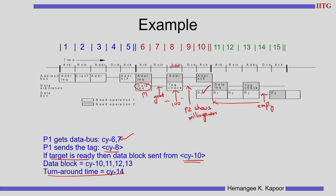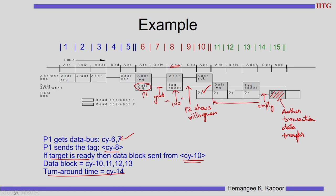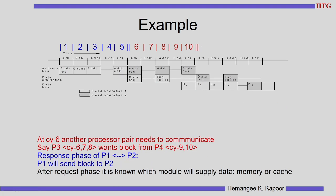Cycle 14 is empty for turnaround time. In cycle 15, as the color code is different, another data transfer takes place — this is not for this particular transaction but another transaction's data transfer. So P1 had the data block, P2 requested the data block, and P1 provided the data block. If we demarcate it in the slide: cycles 1–5 are when P2 sends the request (address request phase), and from cycles 6 to 14 is the phase when P1 sends the data.